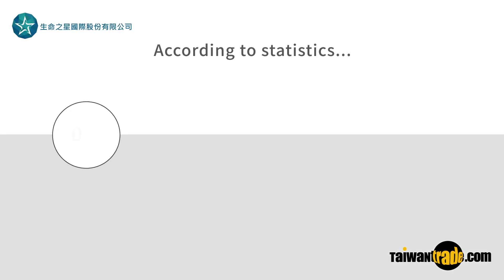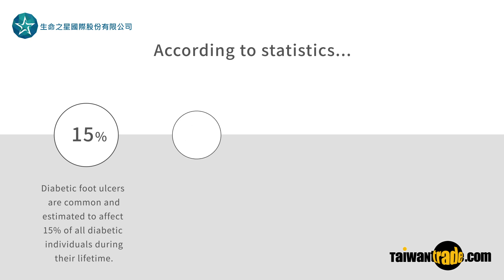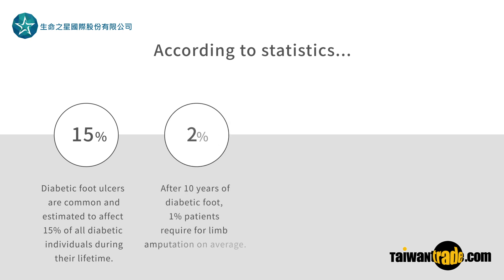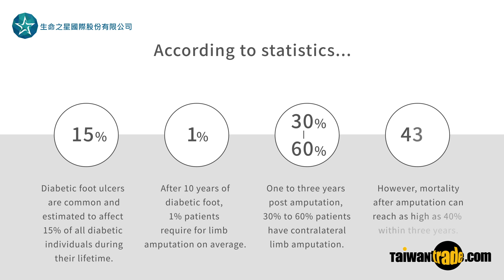According to statistics, diabetic foot ulcers are common and estimated to affect 15% of all diabetic individuals during their lifetime. After 10 years of diabetic foot, 1% of patients require limb amputation on average. 1-3 years post-amputation, 30-60% of patients have contralateral limb amputation. However, mortality after amputation can reach as high as 40% within 3 years.